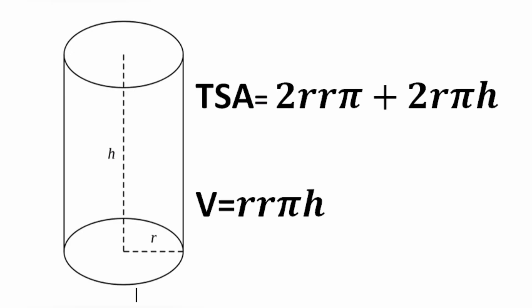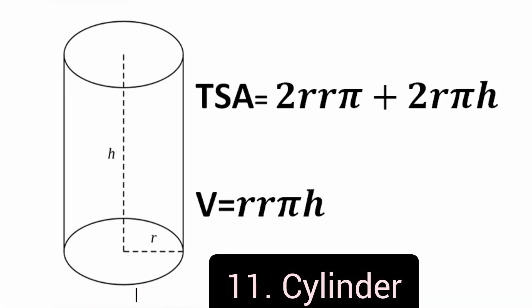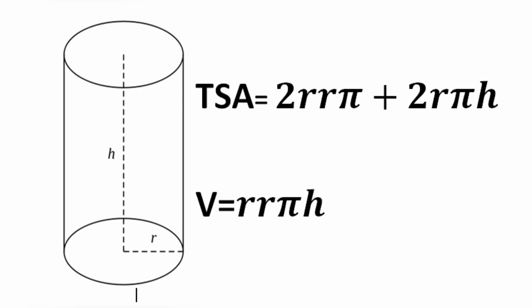Number 11: Cylinder. Cylinder is a three-dimensional solid that holds two parallel bases joined by a curved surface at a fixed distance. Total surface area of cylinder is equal to 2 times pi times radius squared, plus 2 times pi times radius times height.